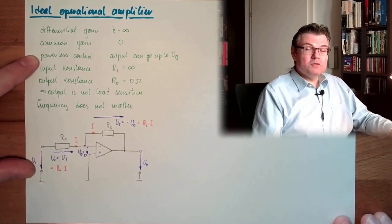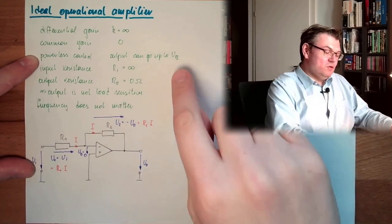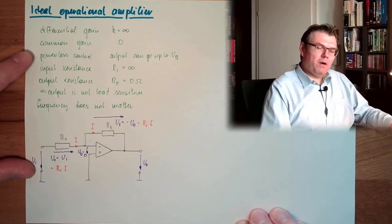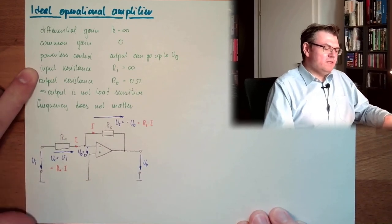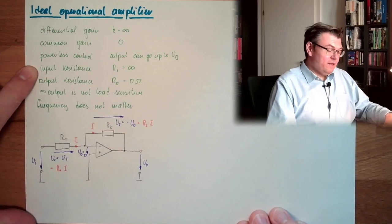Powerless control is also not realized. We will stay a little bit below the supply voltage with the output. I have also mentioned this, I think, in the first video about the operational amplifier. Input resistance is very high. Here we are very good. Very close to the ideal world.